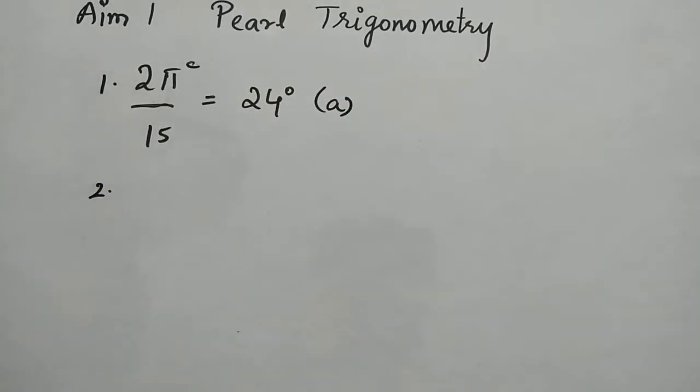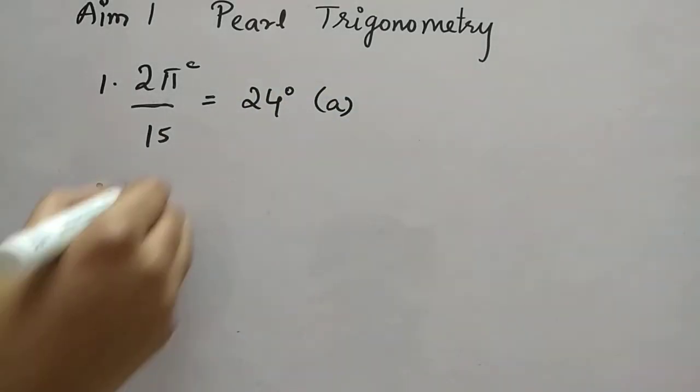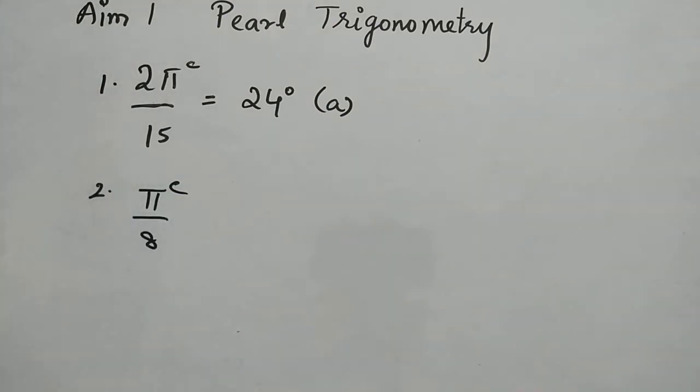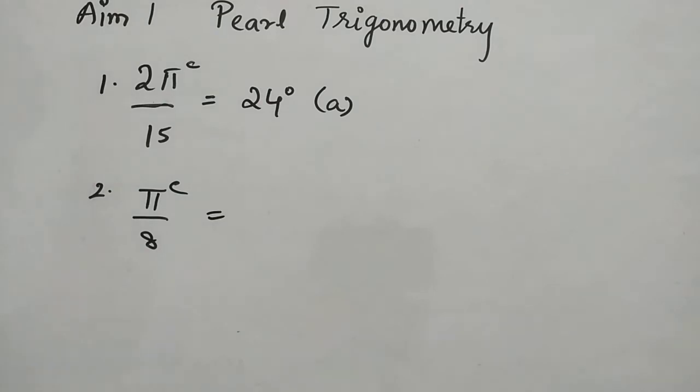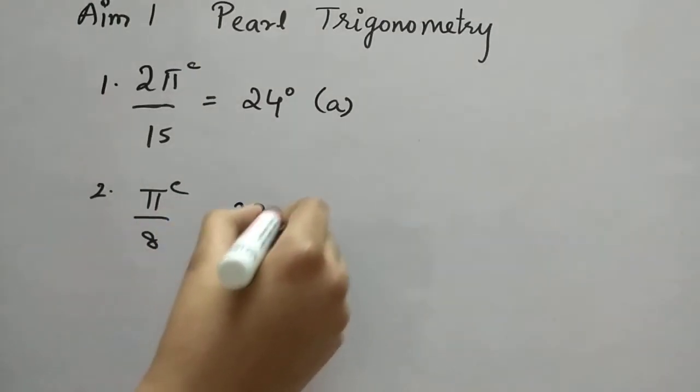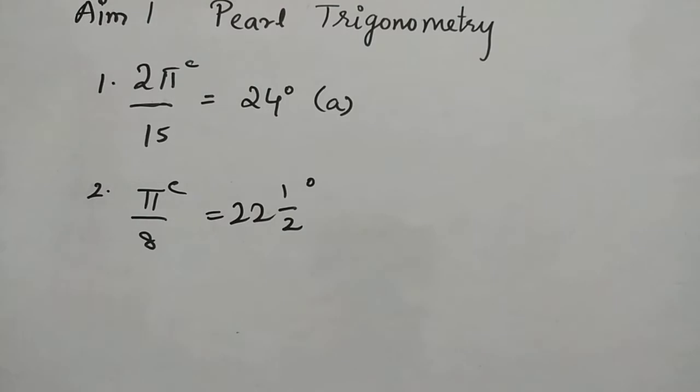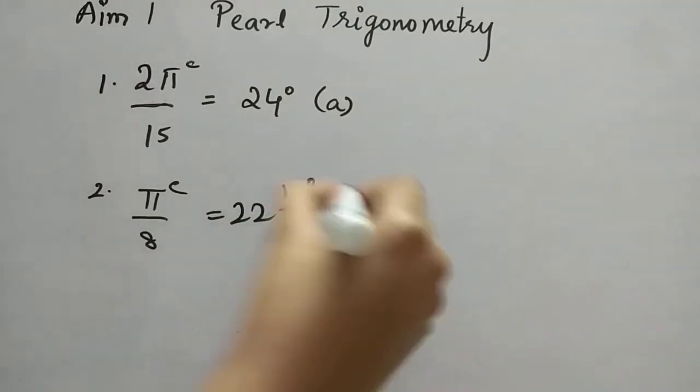Second one, it is pi by 8. This also we have to convert to degrees in improper fraction. So it is 22 and a half degrees, option D.